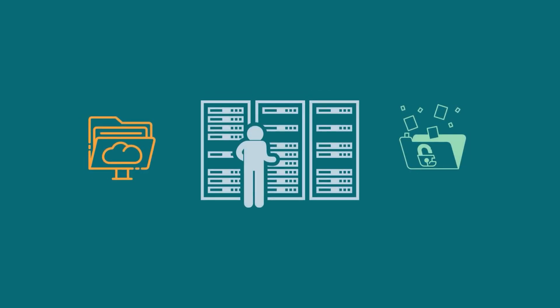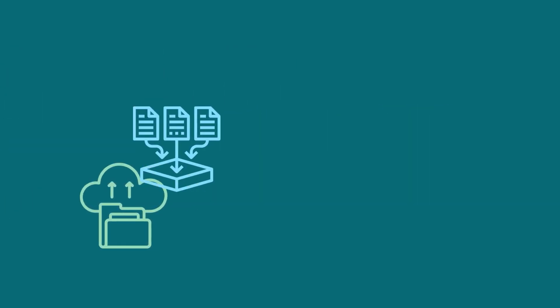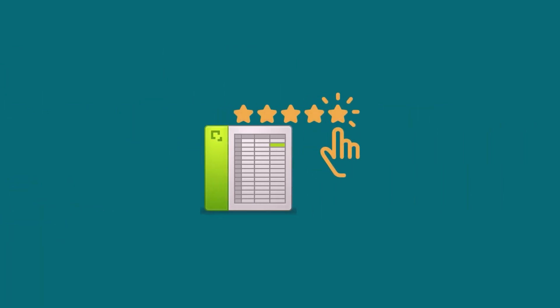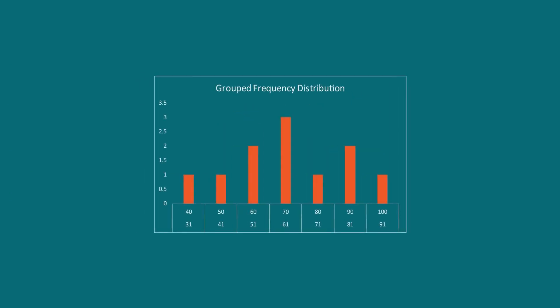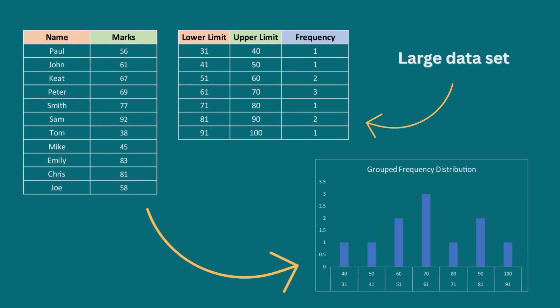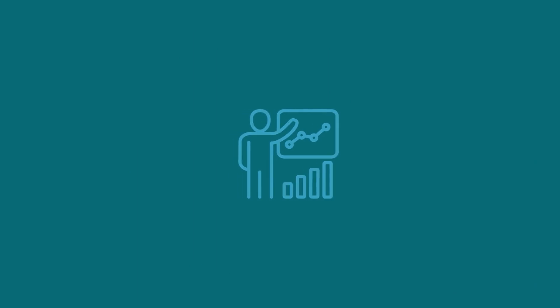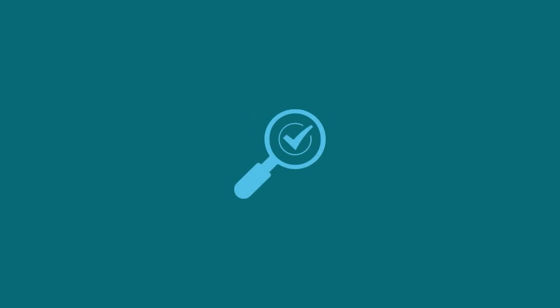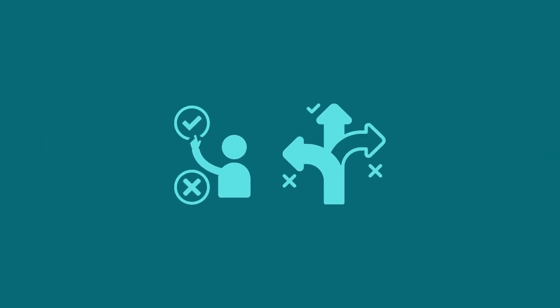We've all worked with large and messy data sets in Excel. Organizing them can be very tiring. But Excel has a nifty trick up its sleeve, and that is grouped frequency distribution. A grouped frequency distribution organizes large data sets by displaying their frequency in an interval. This will help you interpret the data effectively and identify the trends and anomalies in your data, so you can take informed decisions.